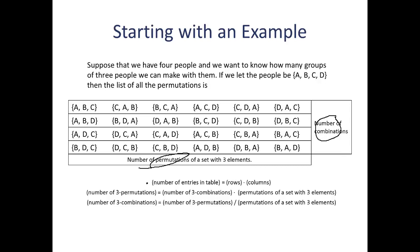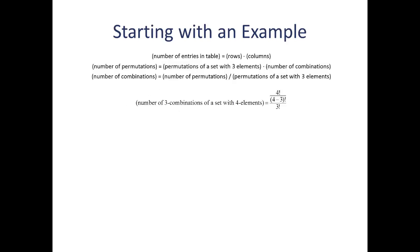Then I'm going to do a little algebra. I'm just going to rearrange this a little bit. I'm going to divide both sides by permutations of a set with three elements. So, I'm going to solve this for the number of three combinations, which is what we're looking to find a formula for here.